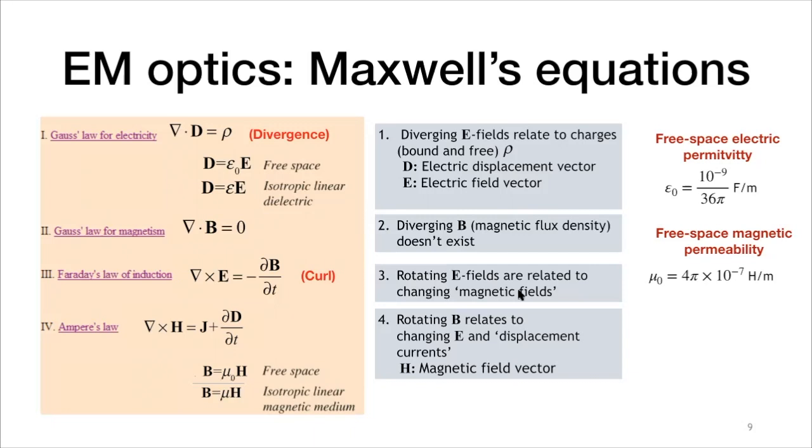For all the media we know, like dielectrics, for example, most of them will have mu equals mu naught, unless in special cases. But for magnetized materials such as iron or nickel or other materials, mu has another different value than mu naught.